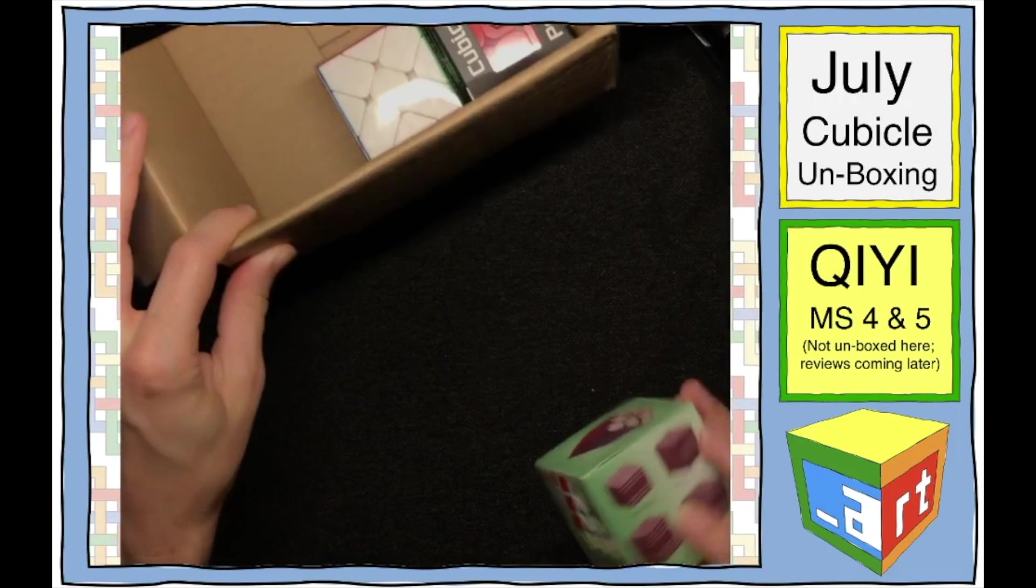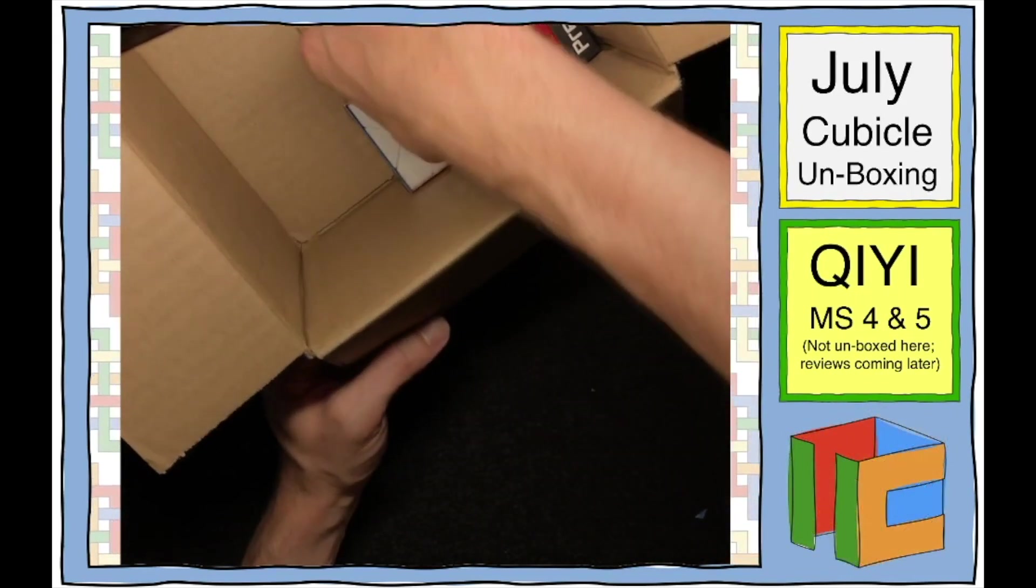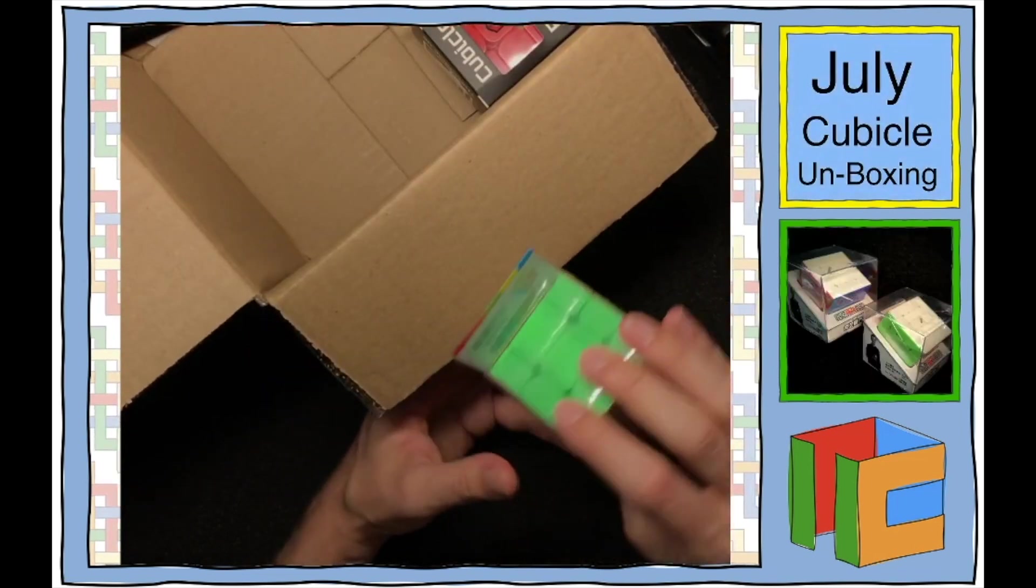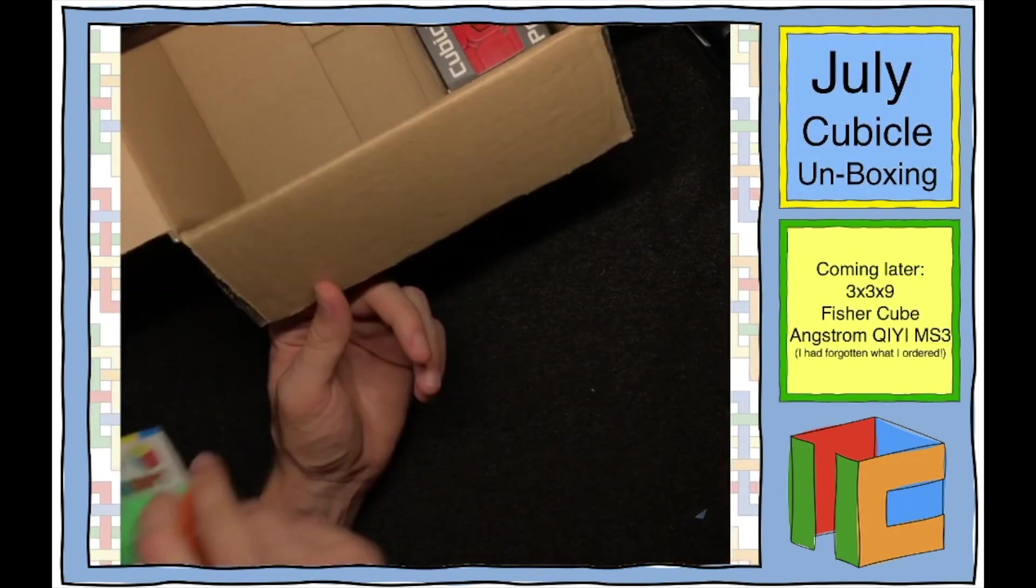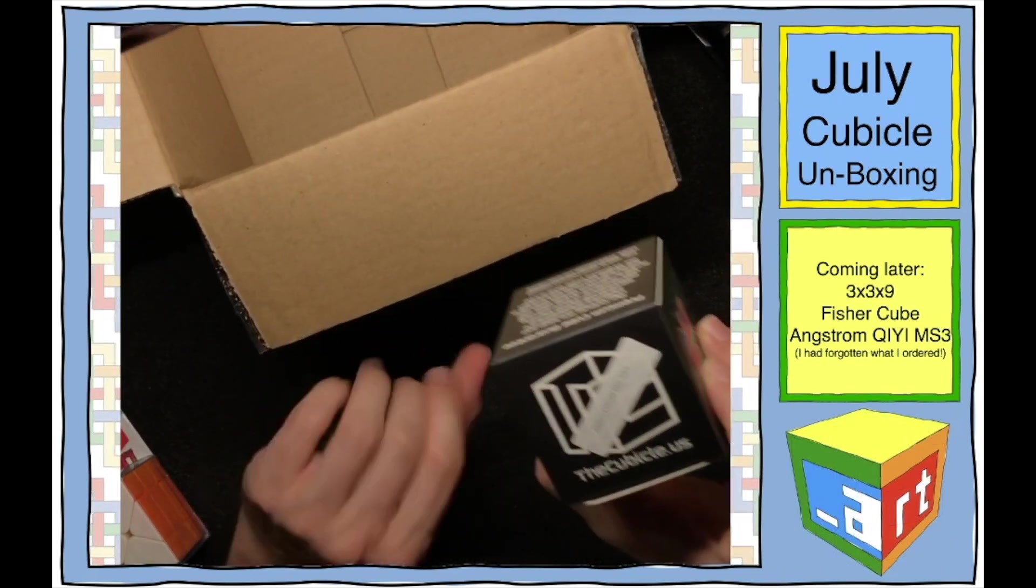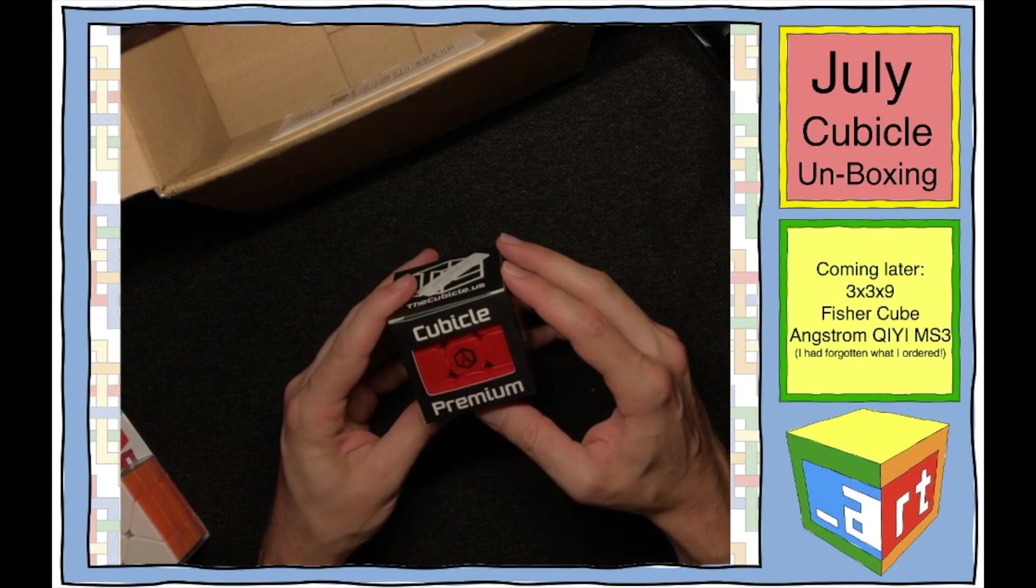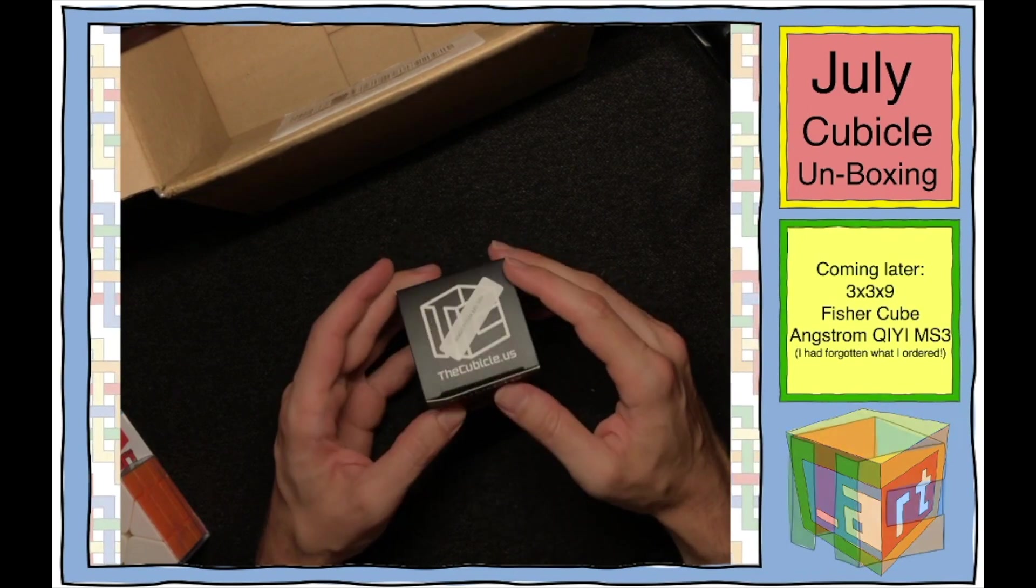So let's see what else is in here. All right, I'm gonna hold on to that for a sec. So real quick, this is just a normal Fisher cube. I don't have one and I wanted one, so I got one. And then, oh, ha-ha, I threw in a little something for me. That's awesome. Too cool.